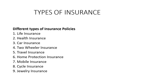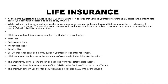First is life insurance. As the name suggests, life insurance can be done for anyone's life. Life insurance plans include term plans, endowment plans, money back plans, and pension plans. Life insurance can also help you support your family even after retirement. Life insurance not only ensures the well-being of your family but also brings tax benefits.